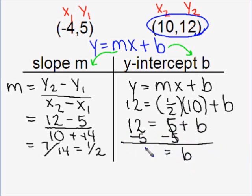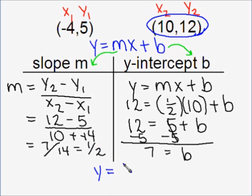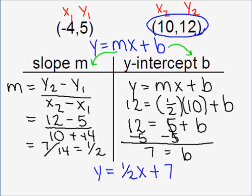So, now that we know our slope and our y-intercept, we're ready to plug into our equation. Y is equal to m — our slope is one-half — times x plus our y-intercept. Our y-intercept is seven. The equation of the line containing these two points is y equals one-half x plus seven.